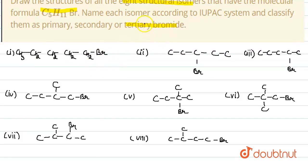So, we have to give their IUPAC name and classify them as primary, secondary and tertiary bromide.